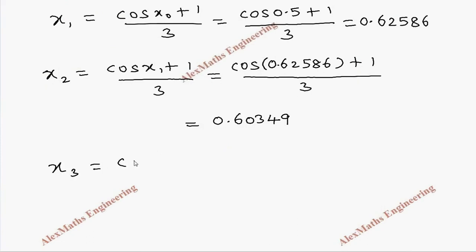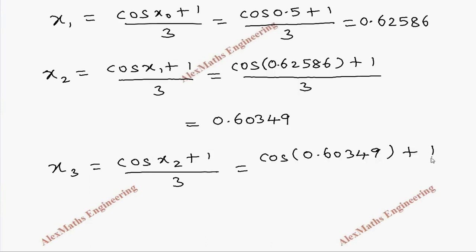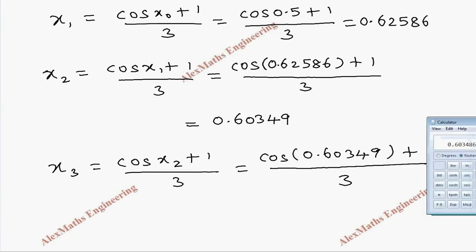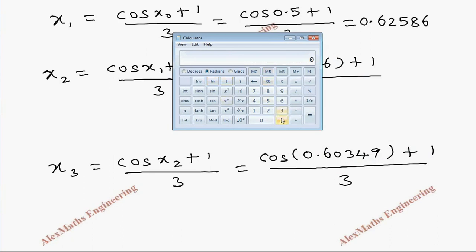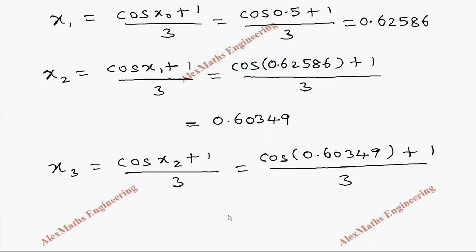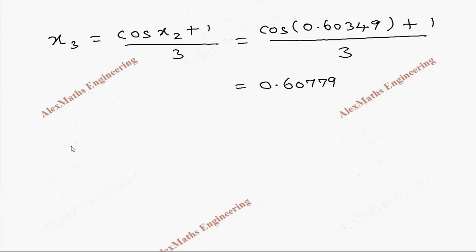Now x3 = (cos x2 + 1) / 3 = (cos 0.60349 + 1) / 3. Calculating using the calculator: 0.60349, cos value, plus 1, whole divided by 3. We get 0.6077866, which rounds off to x3 = 0.60779.